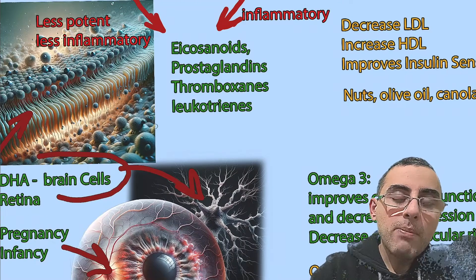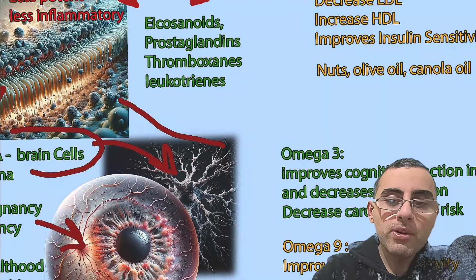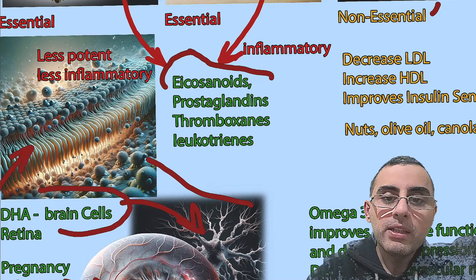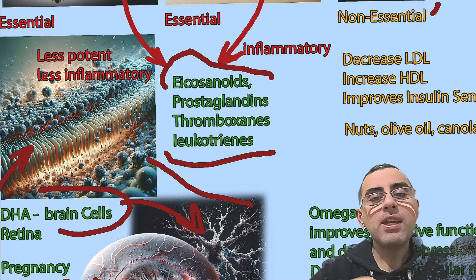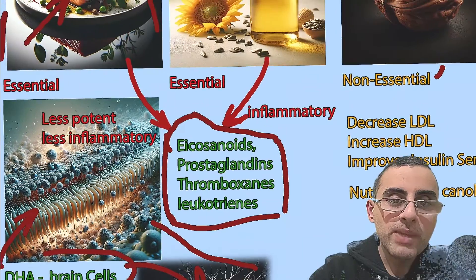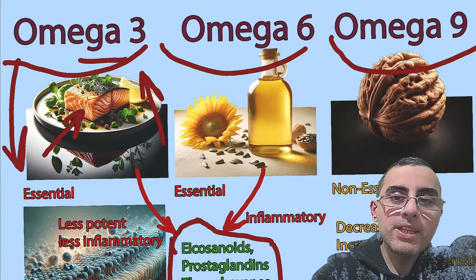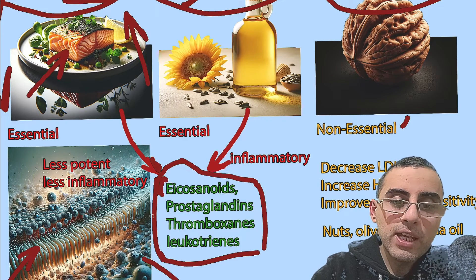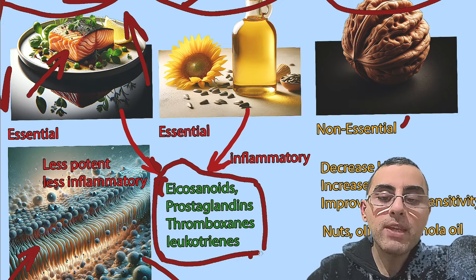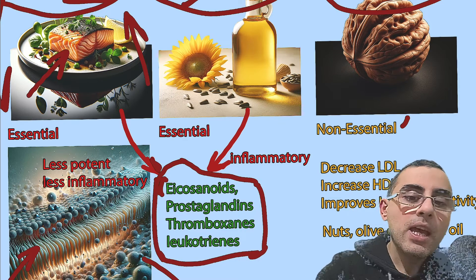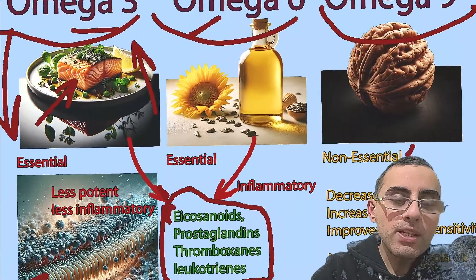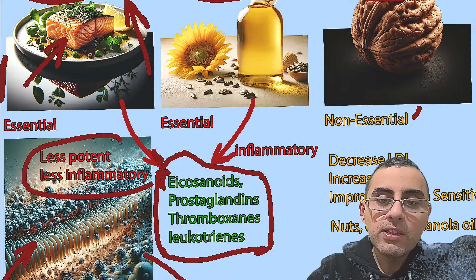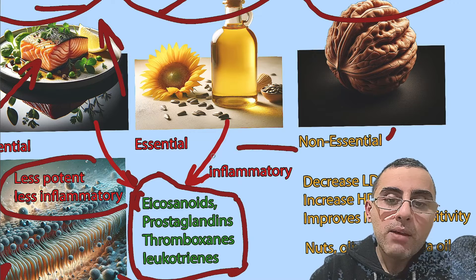Another very important role is that omega-3 participates in the formation of many hormones and eicosanoids. Both omega-3 and omega-6 create eicosanoids, and from eicosanoids we get prostaglandins, thromboxins, and leukotrienes, which are pro-inflammatory.